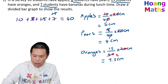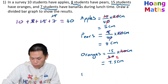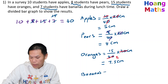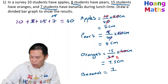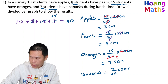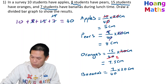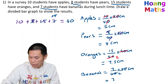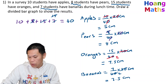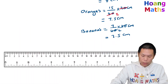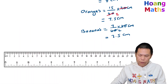For bananas: we have 7 students, so 7 over 40 times 20 centimeters. The 40 and 20 cancel to give 3.5, so bananas is 3.5 centimeters. Now let's construct the bar graph starting from zero and going to 20 centimeters.